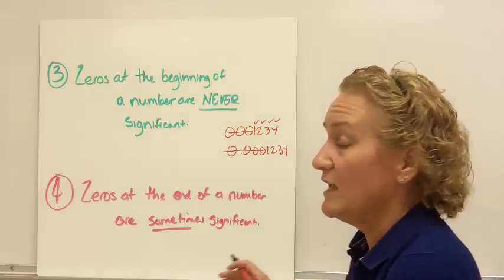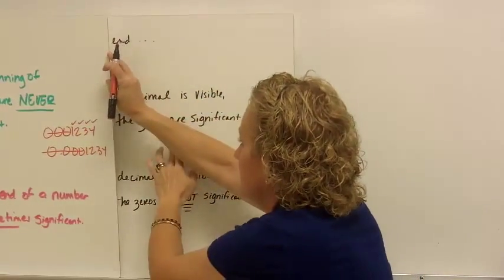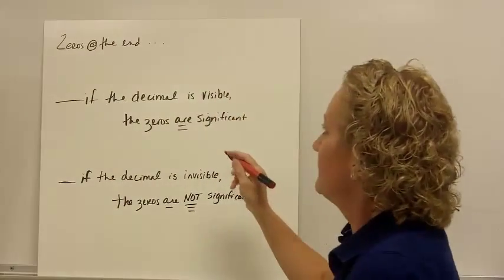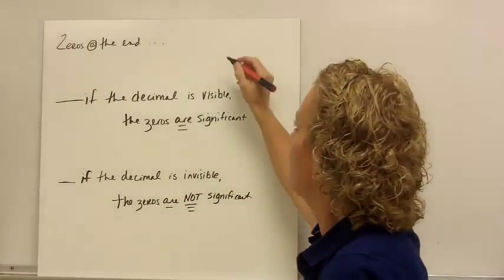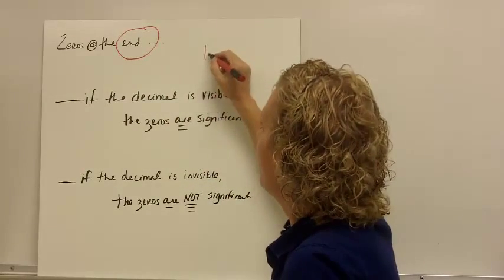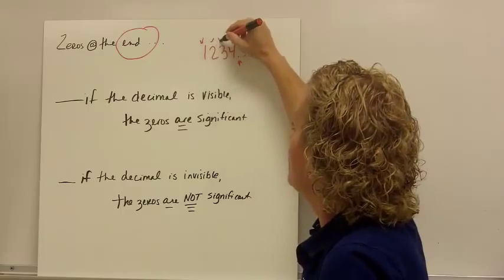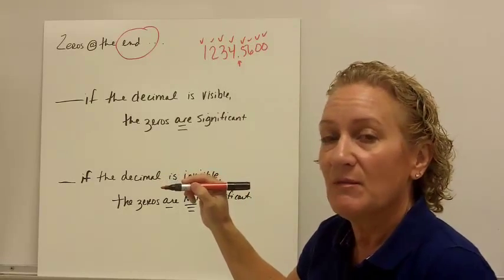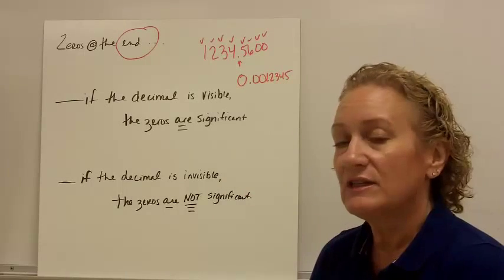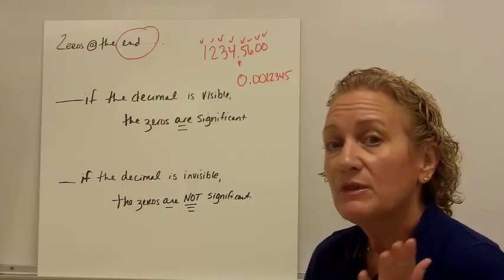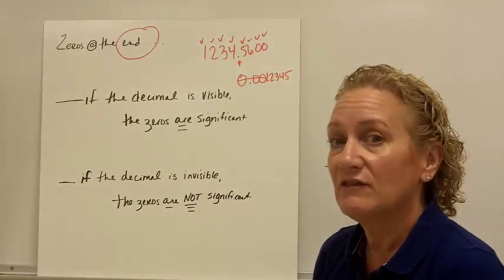Zeros at the end of the number are sometimes significant. There are two easy rules to figure out if they're significant or not. The first rule is: if the decimal is visible — if you can see a decimal anywhere in the number — those end zeros are significant. So, if I have 1234.5600, my decimal is showing, so I have 8 significant figures. However, if the number has zeros at the beginning and the decimal is showing, we already said zeros at the beginning are never significant — so those are not significant. I have 5 significant figures in that case.